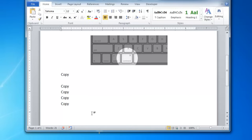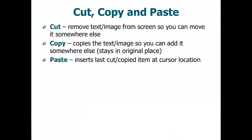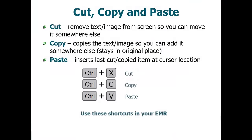If you make a mistake, you can use the shortcut Control Z, or Command Z on a Mac, to undo the previous action. In many cases, these shortcut keys can be used within your EMR, for example, when creating an encounter, chart note, or referral letter, providing you with more flexibility and efficiency and reducing the need for duplication of work.